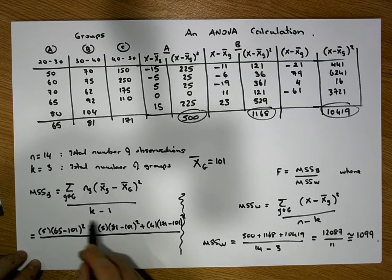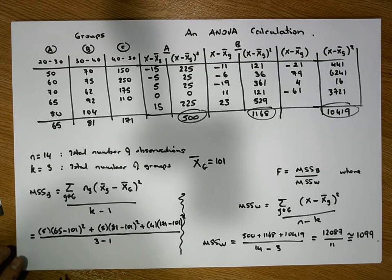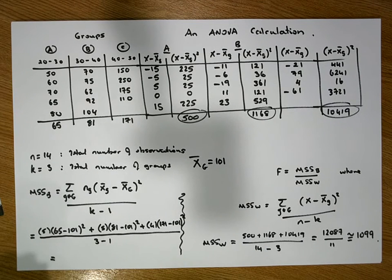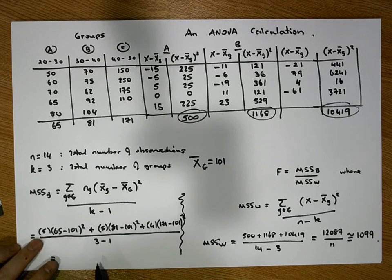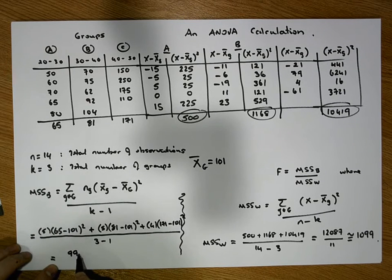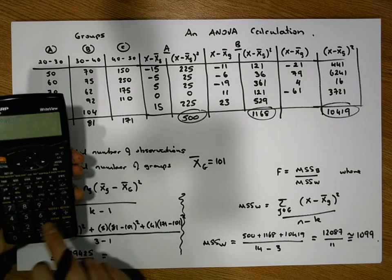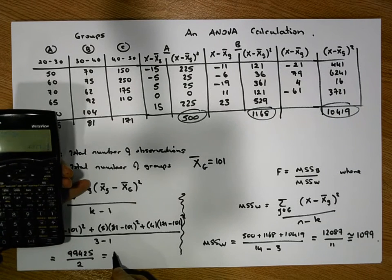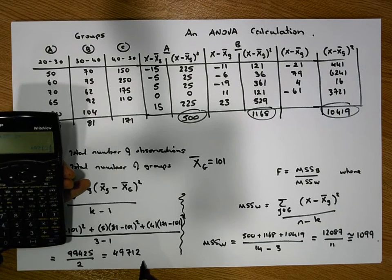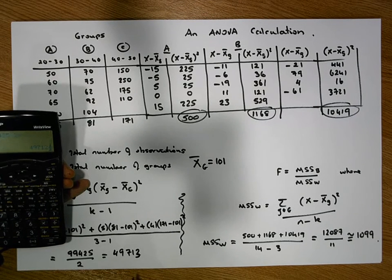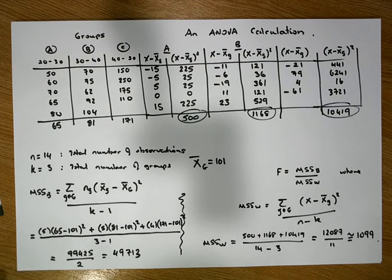That needs to be divided by k minus one, which is three minus one, giving us the mean sum of squares value. When we calculate the numerator we get a sum of squares value of 99,425, and that needs to be divided by two. So 99,425 divided by two gives us a value of approximately 49,720, rounded to the nearest whole number.